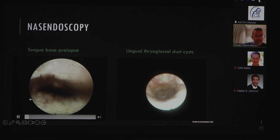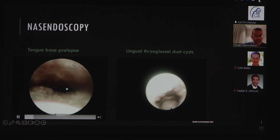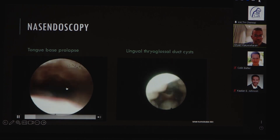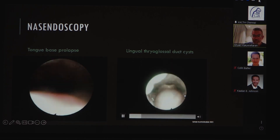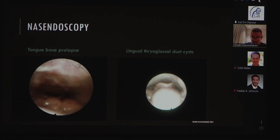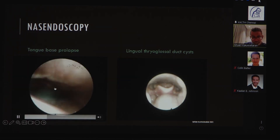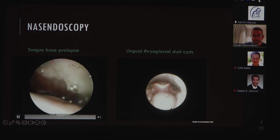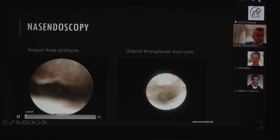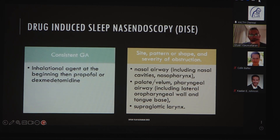On nasendoscopy, you may see things like a patient with macroglossia where the tongue is sitting up against the retropharyngeal structures, or a lingual thyroid, or a thyroglossal duct cyst in the tongue base. Both awake and asleep endoscopy are vital in treating these patients who have ongoing symptoms following routine surgery.